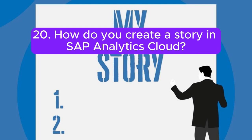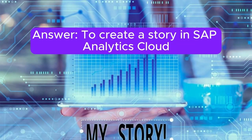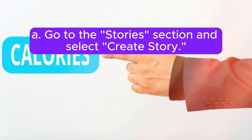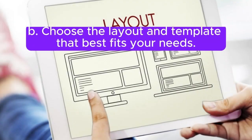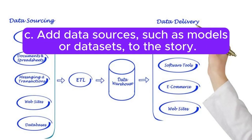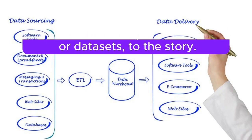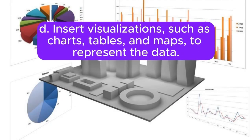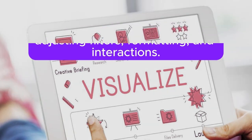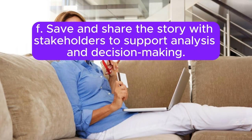Question 20: How do you create a story in SAP Analytics Cloud? Answer: To create a story in SAP Analytics Cloud: A. Go to the Stories section and select Create Story. B. Choose the layout and template that best fits your needs. C. Add data sources, such as models or data sets, to the story. D. Insert visualizations such as charts, tables, and maps to represent the data. E. Customize the visualizations by adjusting filters, formatting, and interactions. F. Save and share the story with stakeholders to support analysis and decision-making.